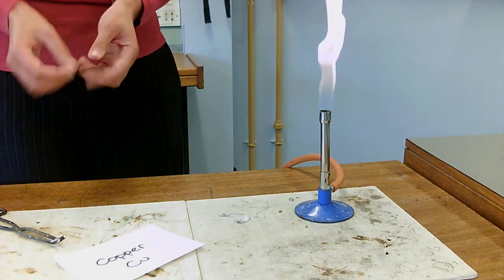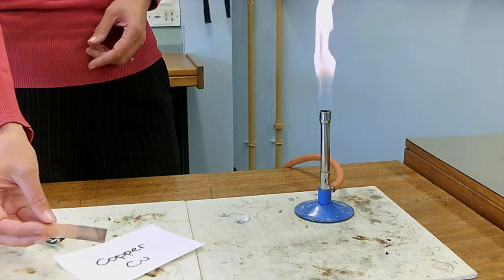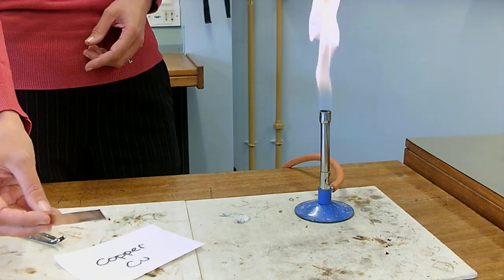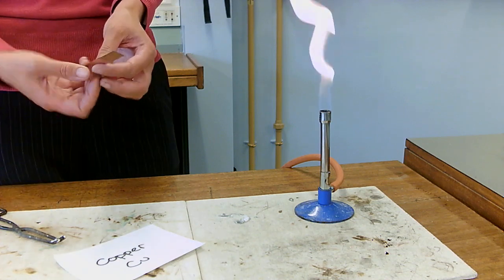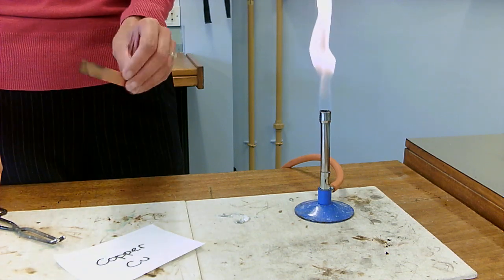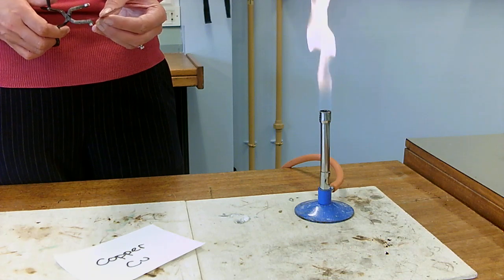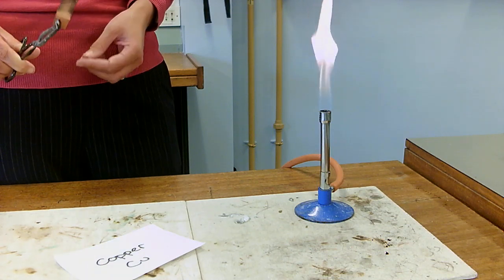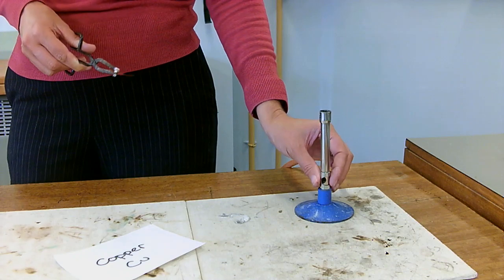So, copper is this orangey copper colored metal, make pipes out of it. You'll remember from when we put it with the acids that it did not make hydrogen gas. Let's see what happens, see if I can get it to react with oxygen from the air.